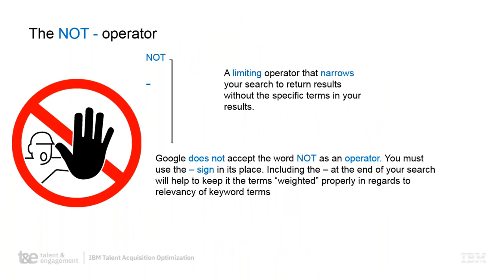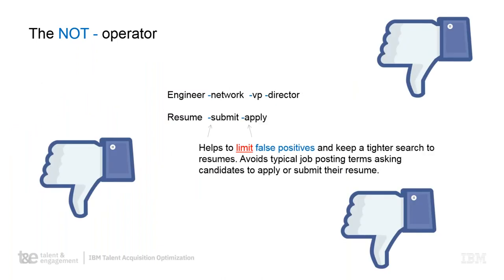The NOT operator is a way to narrow your search. It helps to limit false positives. For example, 'resume NOT submit NOT apply' does not mean those results won't show up at all — what it does is try to limit those results. Do not think that writing NOT submit or NOT apply will eliminate all of those from your results. It means it's going to do its best to limit them.